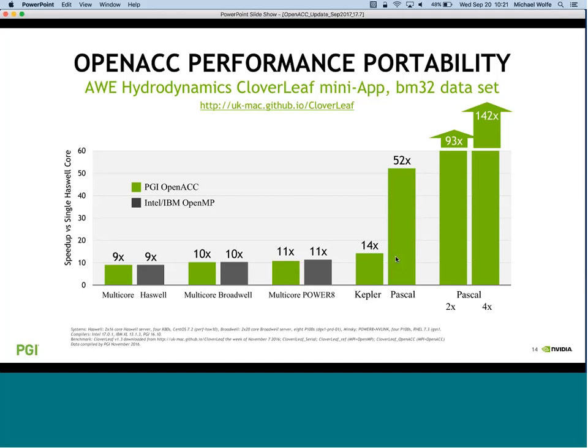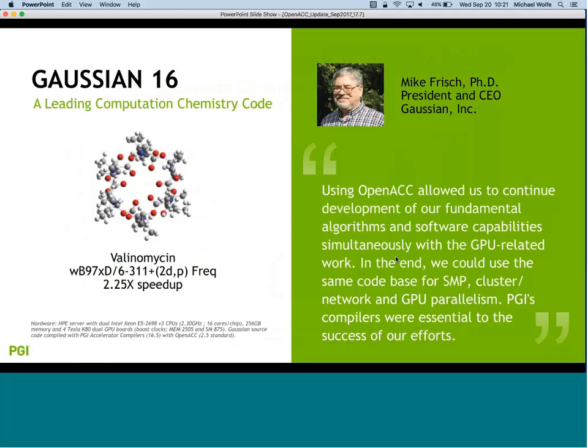We've been showing benchmarks like this for a few years, but what's new now is adoption in real applications - community applications and independent software vendors. Gaussian, one of the largest chemistry codes, wanted a way to move computationally intensive parts onto a GPU without having to refactor the entire program. OpenACC fit that bill, and they get to use the same code for multi-core as well.